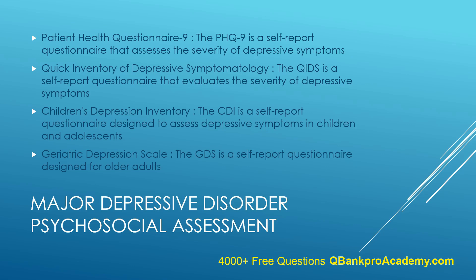The Beck Depression Inventory (BDI) is a self-report questionnaire that assesses the presence and severity of depressive symptoms. It consists of 21 items, each scored on a scale from 0 to 3, with the total score indicating the level of depressive symptomatology. The Montgomery-Åsberg Depression Rating Scale (MADRS) is a clinician-administered scale that includes 10 items focusing on mood, vegetative symptoms, and cognitive aspects of depression. The Zung Self-Rating Depression Scale (SDS) is a self-report questionnaire consisting of 20 items, where patients rate the frequency and intensity of their symptoms, with the total score reflecting the level of depressive symptoms.